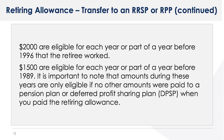Let's take a look at what amounts are eligible and what amounts are not. $2,000 are eligible for each year or part of a year before 1996 that the retiree worked. $1,500 are eligible for each year or part of a year before 1989. It is important to note that amounts during these years are only eligible if no other amounts were paid to a pension plan or deferred profit sharing plan or DPSP when you paid the retiring allowance.